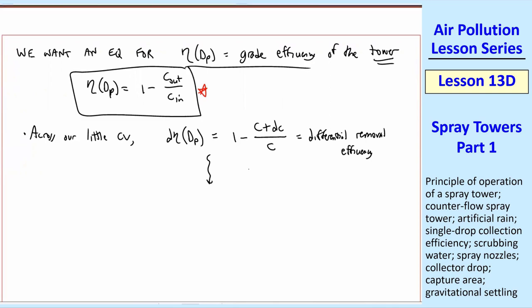So, in terms of our control volume, C is what's coming in, and C plus DC is what's coming out. So, we can generate this differential equation. We'll call this a differential removal efficiency. Do a little bit of algebra, multiply by C, and you see that those C's cancel out. We can solve for DC over C. It'll be negative d eta, and these are all as a function of DP. I'm going to call this equation 1.